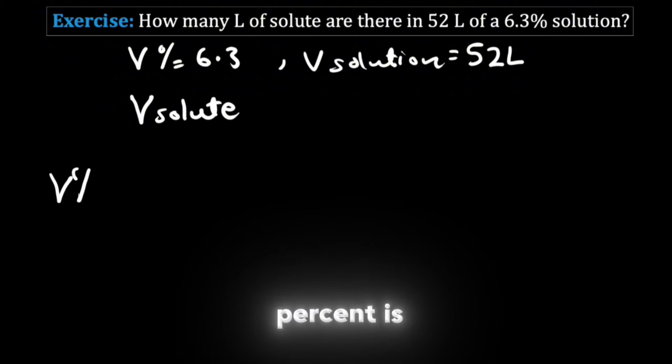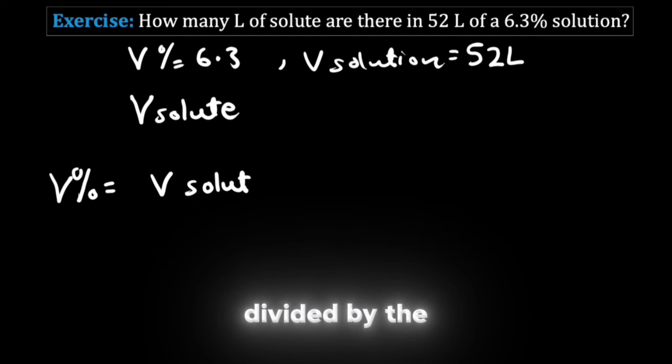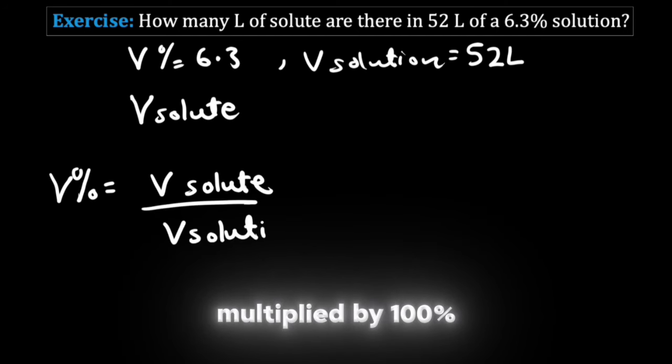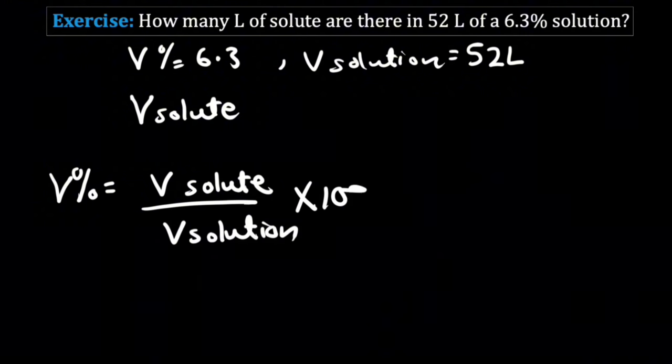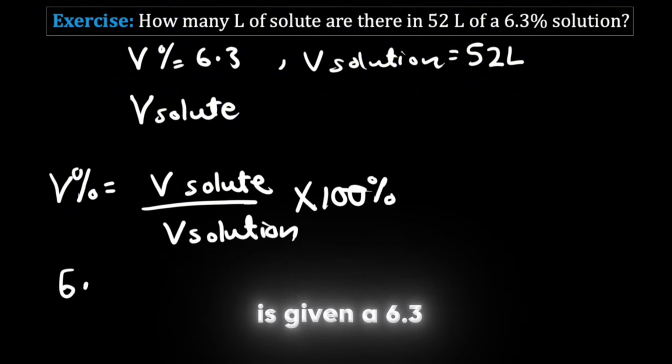Now we know that the volume percent is equal to the volume of the solute divided by the volume of the solution multiplied by 100%. Now let us just substitute the values. So volume percent is given as 6.3.